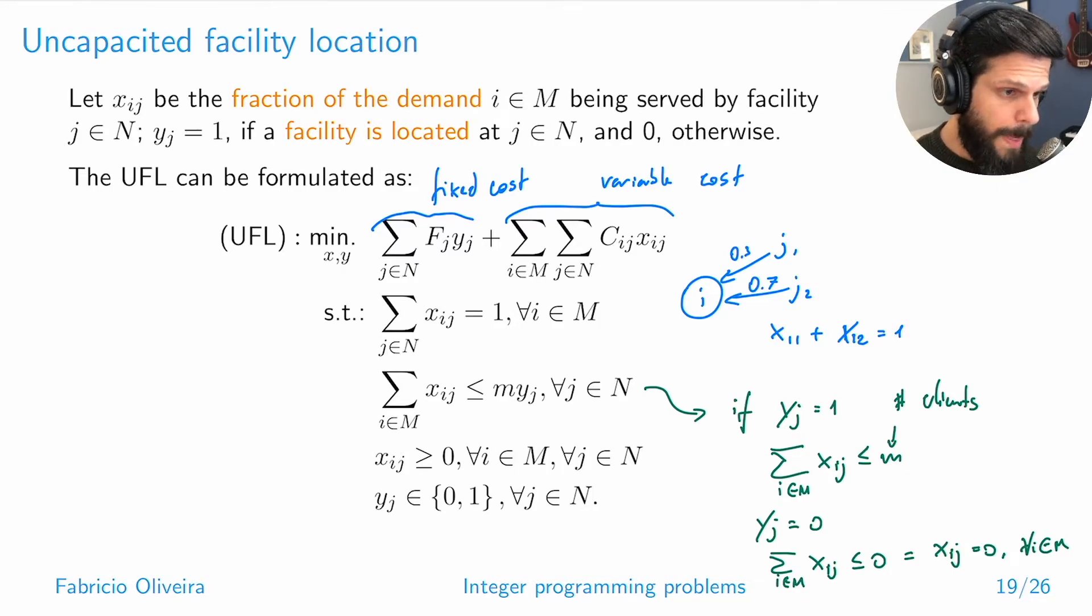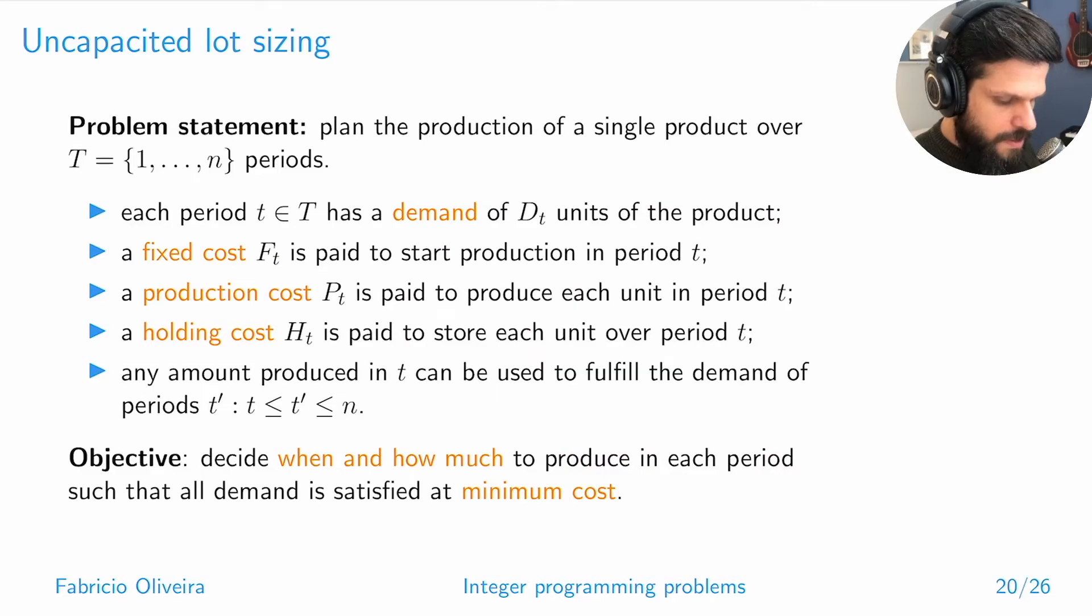That's the uncapacitated facility location, a very important example in supply chain management. Another important one centering on production planning is uncapacitated lot sizing. We talked about lot sizing when we discussed linear programs. The difference is we didn't have the fixed cost associated with production. We're augmenting the lot sizing problem to its traditional variant where if you want to produce, you have to pay a fixed cost to start production. For example, your production might depend on specific technical labor or you might need to rent equipment.